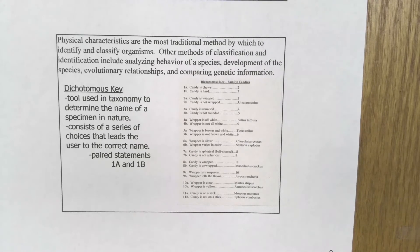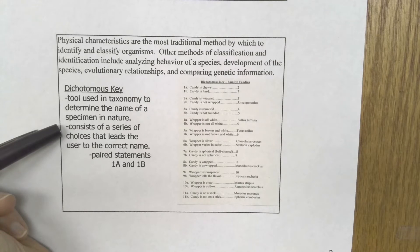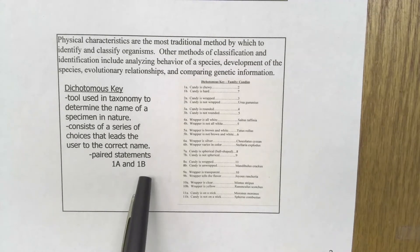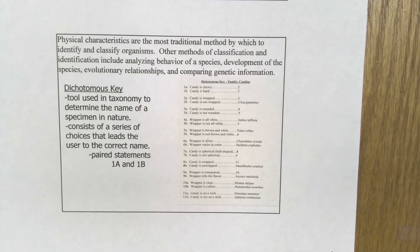This is really just a process skill — learning how to use this. A dichotomous key always consists of a series of statements or choices in pairs, always like 1A and 1B, 2A and 2B. The key may be hundreds of paired statements long, or it may be fairly short like this one. We're going to use candy to help you understand how to do this, and then you'll have homework in your dichotomous key lab.